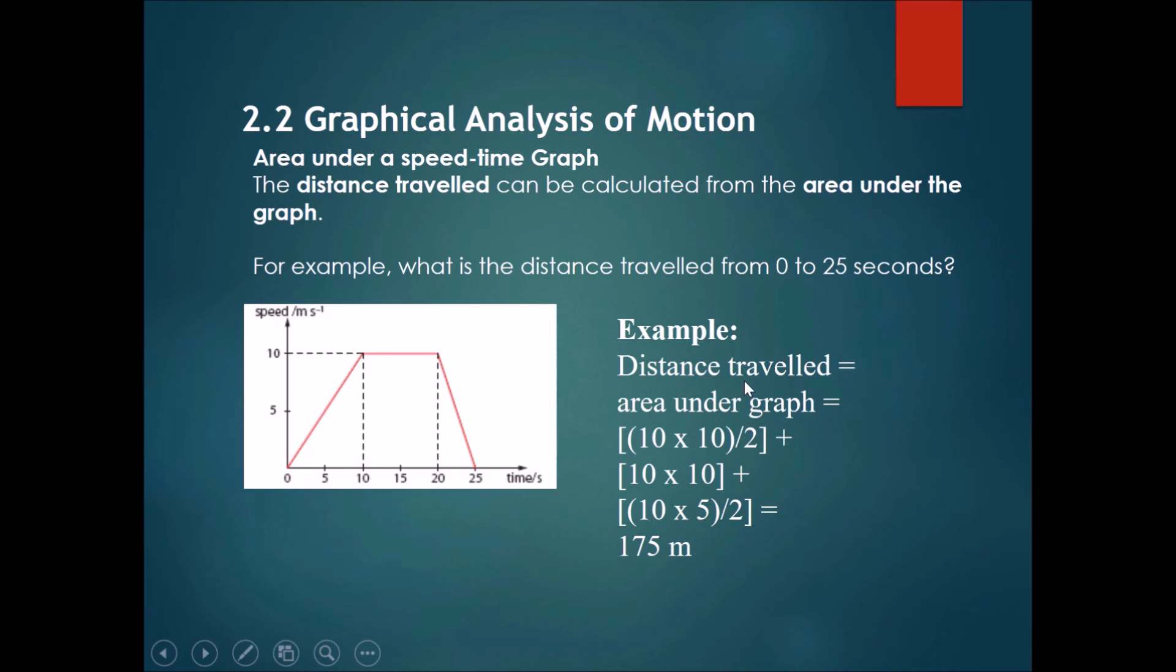So the distance traveled or the area under the graph, to me, I would first get the area of this triangle, then this rectangle, then this triangle. Let's try it. So in this triangle, it will be 10 times 10 divided by 2. I'll divide by 2 because this is a triangle, after all. Half base times height. That's the area of a triangle.